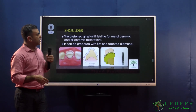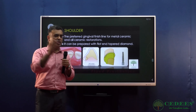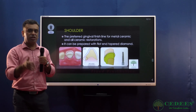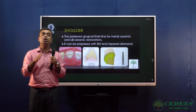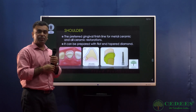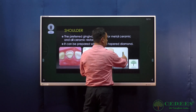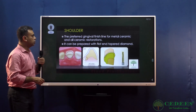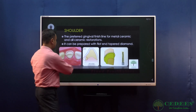A shoulder finish line is generally preferred for metal-ceramic or all-ceramic restorations but is more aggressive than a heavy chamfer. It is prepared using a flat-end tapering burr.